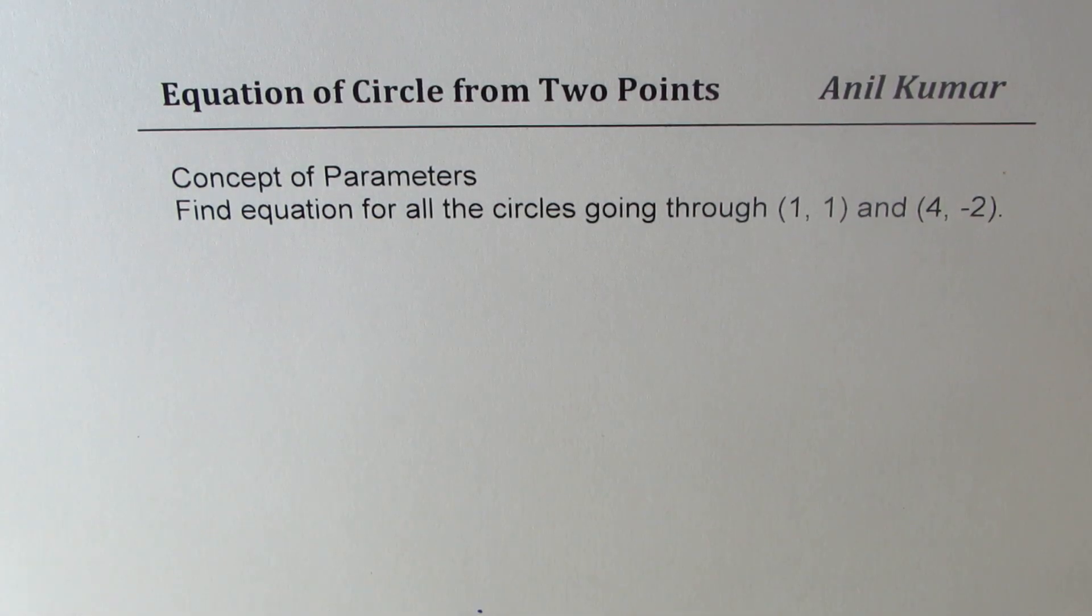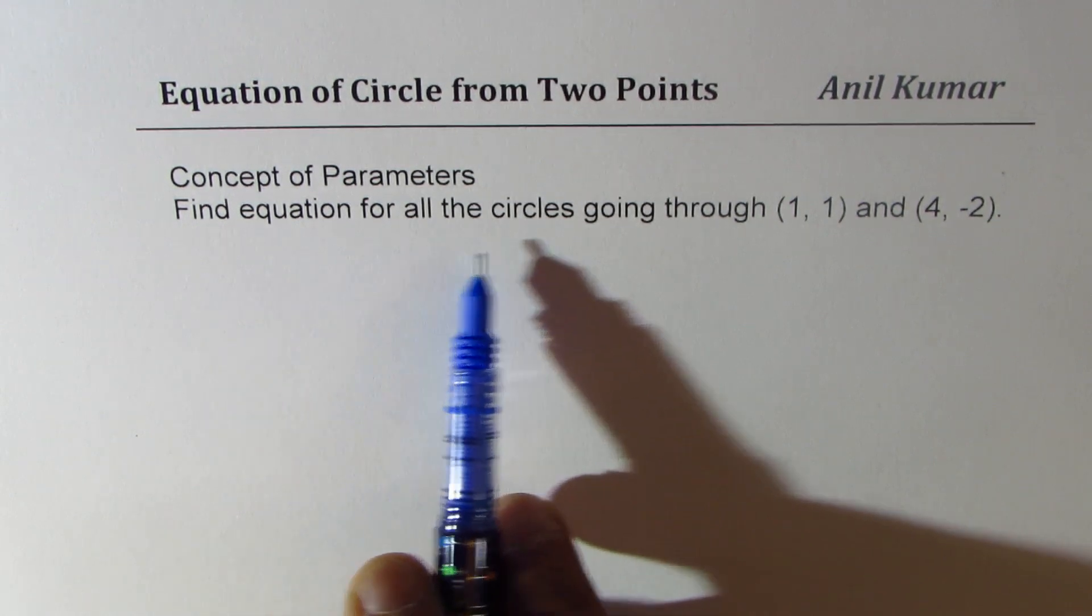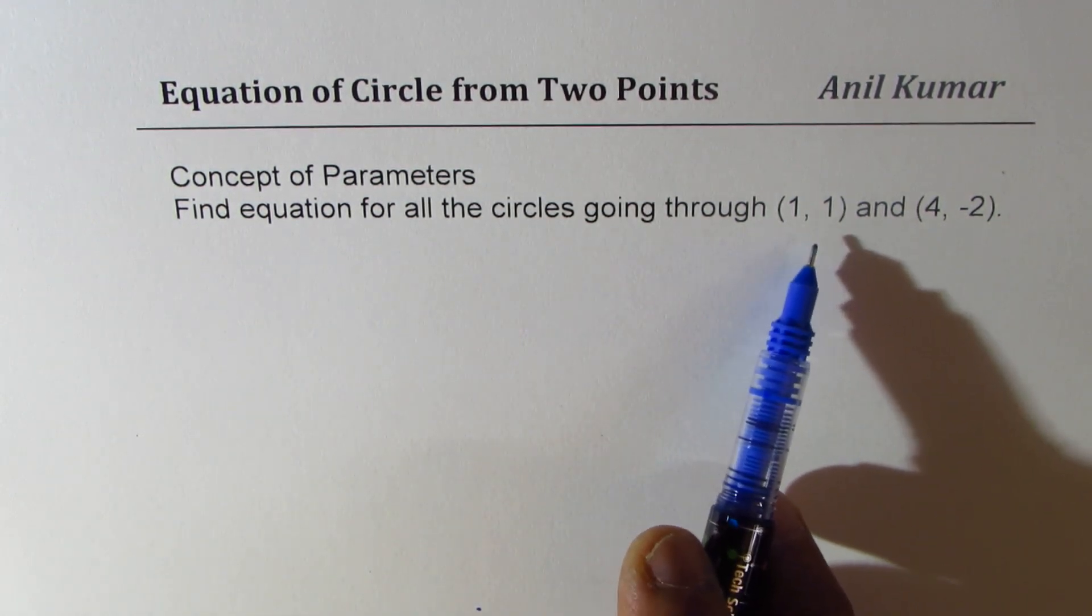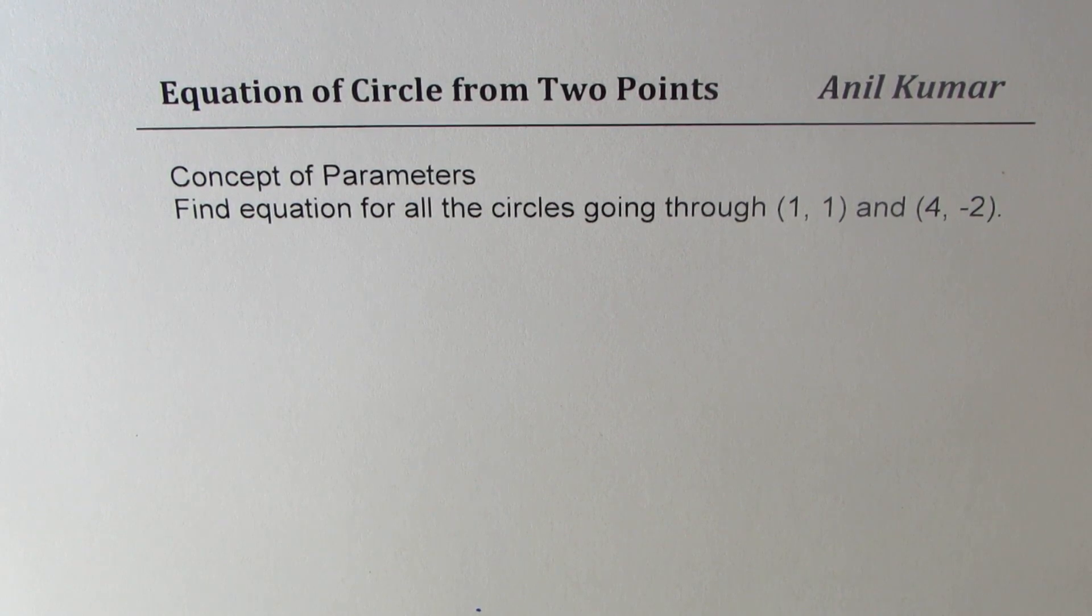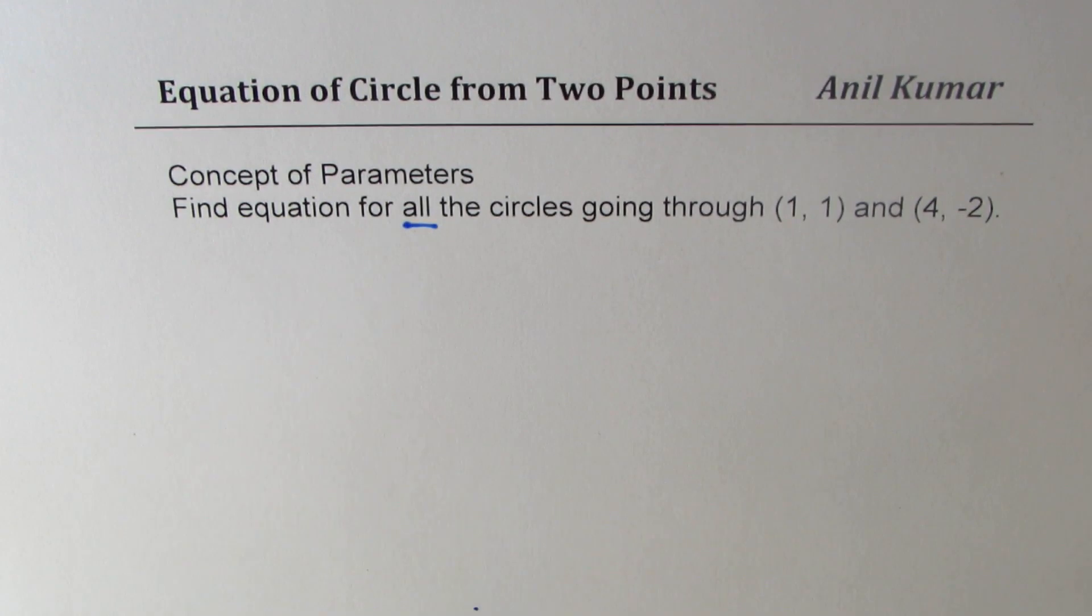I'm Anil Kumar. Let's try to find the equation of a circle from two points. We'll also learn the concept of parameters in this exercise. The question is: find the equation for all circles going through (1,1) and (4,-2). It's important to note that the question says find equations of all circles - that means there is a family of circles which can go through two points. So we need to find the equation of the whole family.